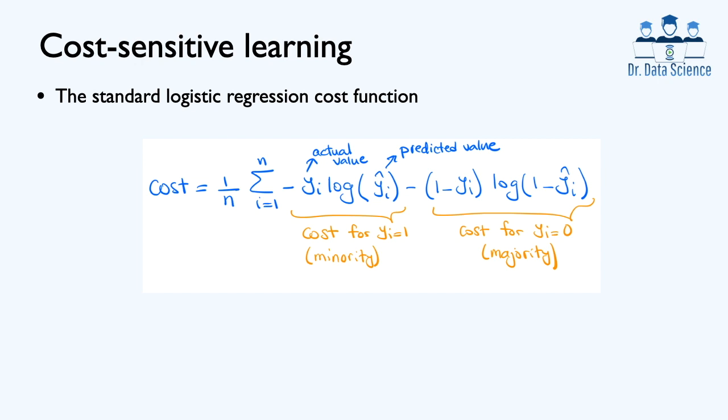In logistic regression, we call the positive class 1 and the negative class 0 instead of negative 1 that we used before. This is just for convenience and doesn't really matter what numerical values we assign to each class as long as we use two distinct numbers. Here, yi is the actual label and y hat i is the predicted probability, which is a real valued number between 0 and 1.